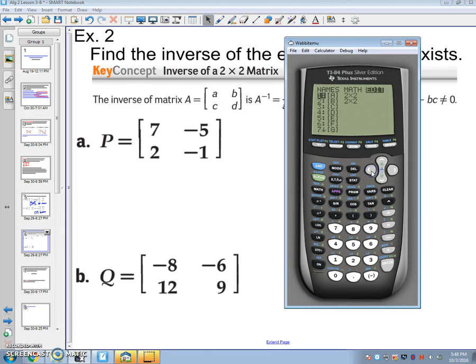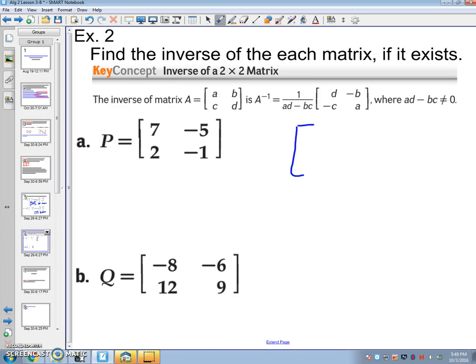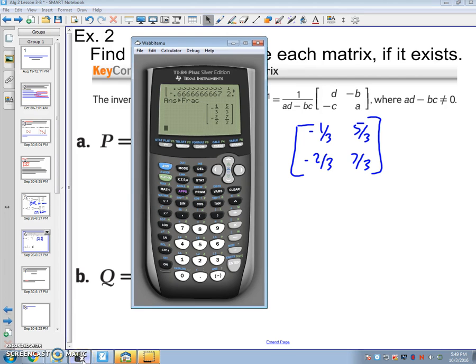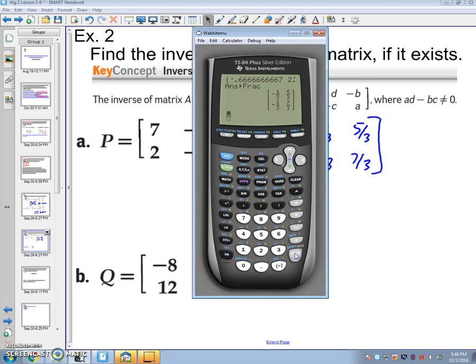So we're going to go second matrix, edit, 2 by 2. Put in P: 7, negative 5, 2, negative 1. Second quit for home. So put it down to the second matrix A. Now inverse is the button right underneath the math, that negative 1 exponent. That gives you the answer. Now those are all decimals, so you need to click math, convert to fractions. So that's my answer: negative 1/3, 5/3, negative 2/3, 7/3. Those are inverses. If I multiply them, I'll get the identity matrix: 1, 0, 0, 1. Now that works for anything. If I had the fraction, for example, earlier I said that we had 2/5, and I wanted to find the inverse, if I do that negative 1, I will get 5/2.